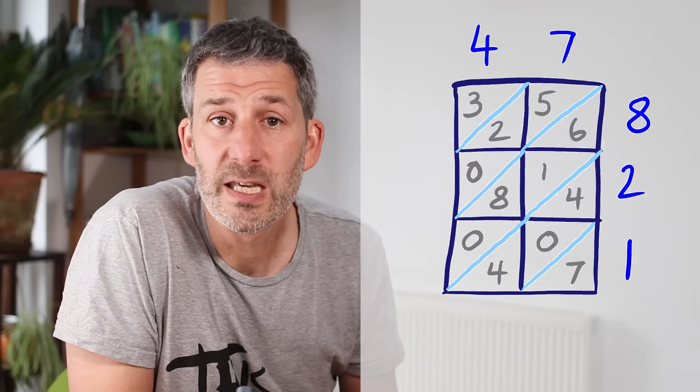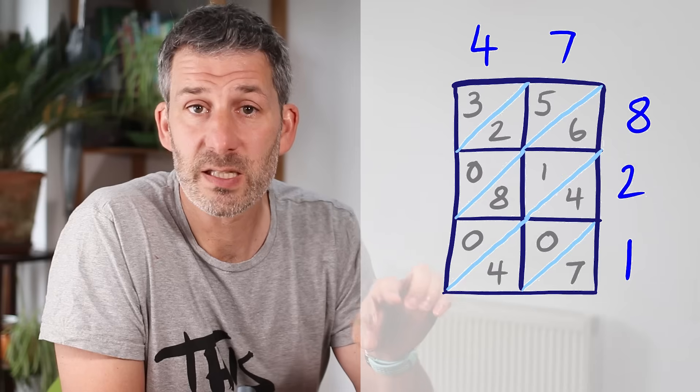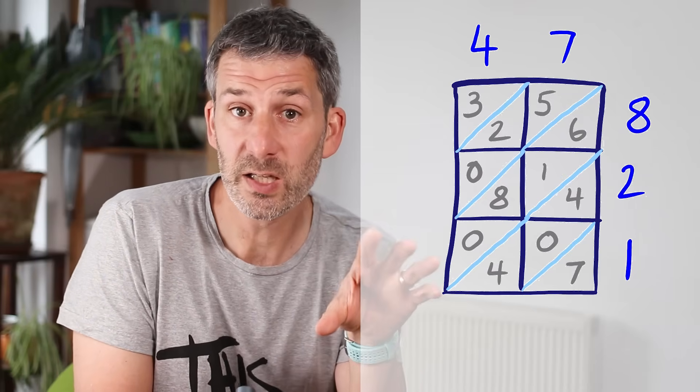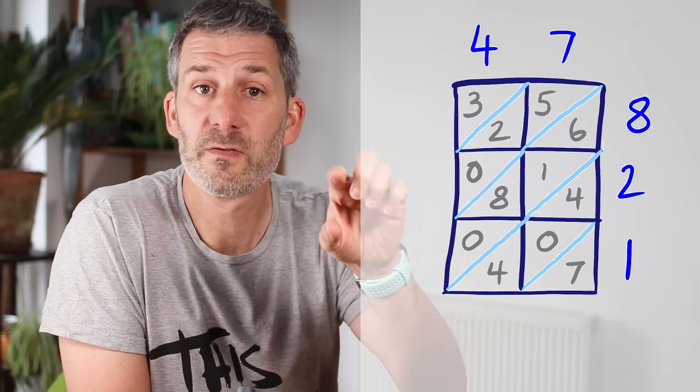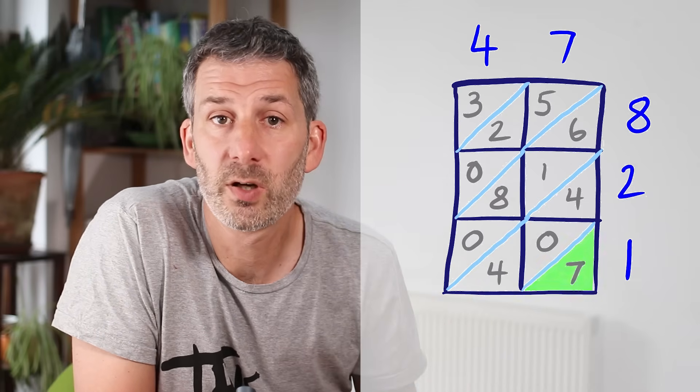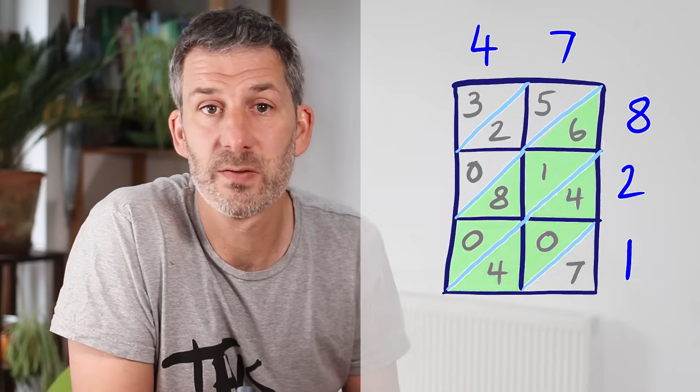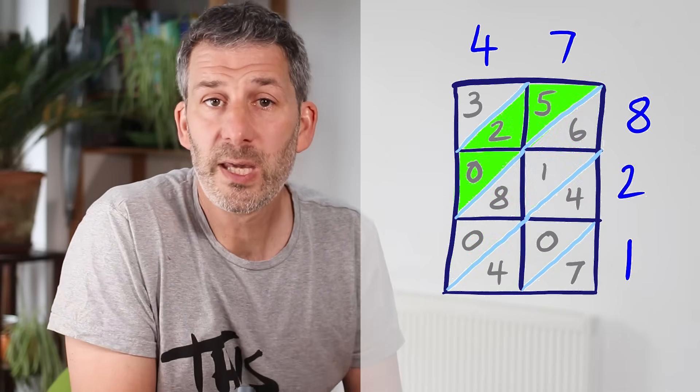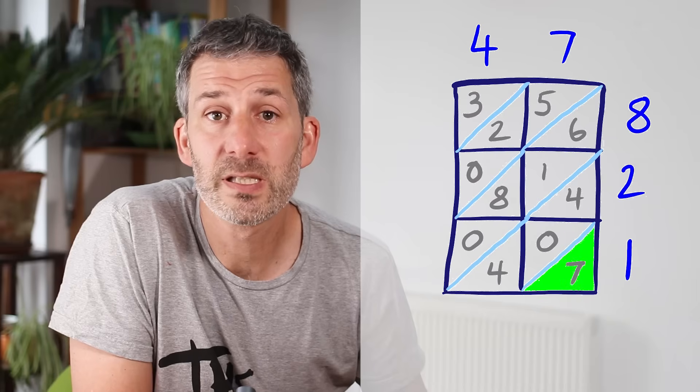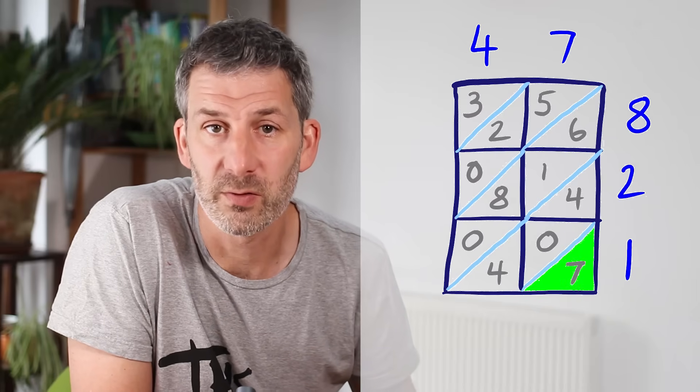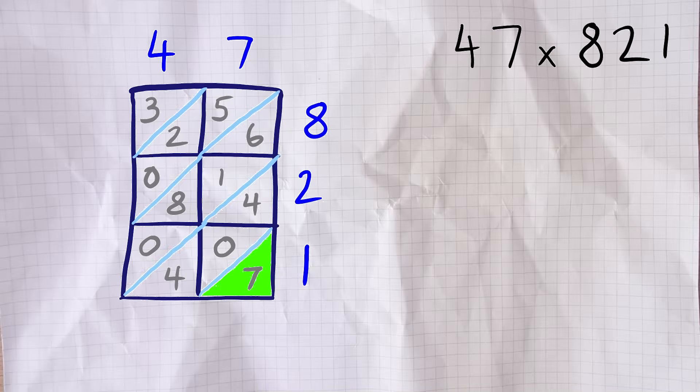Stage 3, the final stage, is to add those numbers up inside our grid but we do it in a particular way. We now ignore the boxes and instead focus on the diagonal columns. We begin at the bottom right and add up everything in the first diagonal. There's only one number in the first diagonal so we just write that underneath.